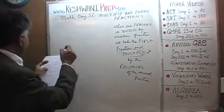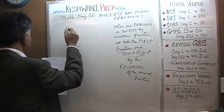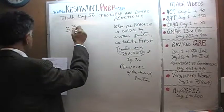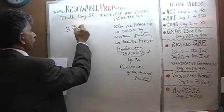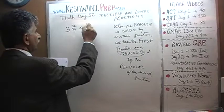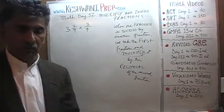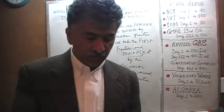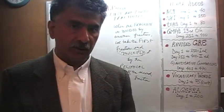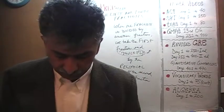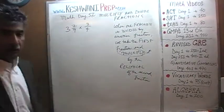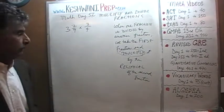The very first one we have is 3 and 7/9 times 3/4. The question actually is: what is the product of 3 and 7/9 and 3/4? What is the product of these two numbers? That is the same as saying we have to multiply them.